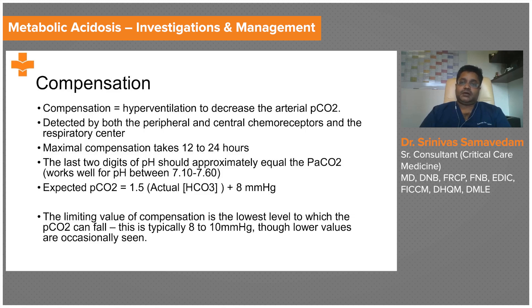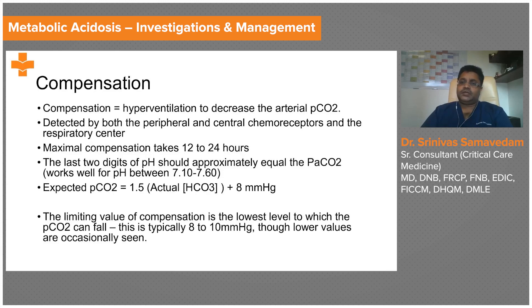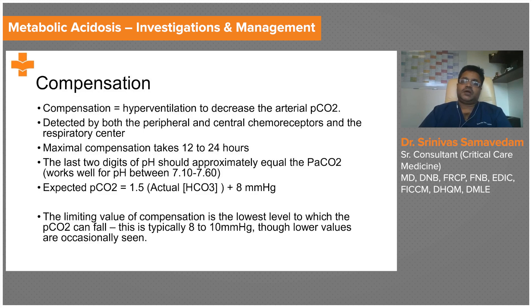If the CO₂ is higher than 23 in this example, it means the patient has both metabolic acidosis and a respiratory acidosis. If the CO₂ is less than 23, the patient has, in addition to metabolic acidosis and compensation, a primary respiratory alkalosis. There is a limit: the lowest level to which CO₂ can fall is typically 8 to 10 mmHg. If someone has a CO₂ of 6 or 7, there is a primary respiratory alkalosis regardless — even before applying the one-and-a-half plus eight rule.